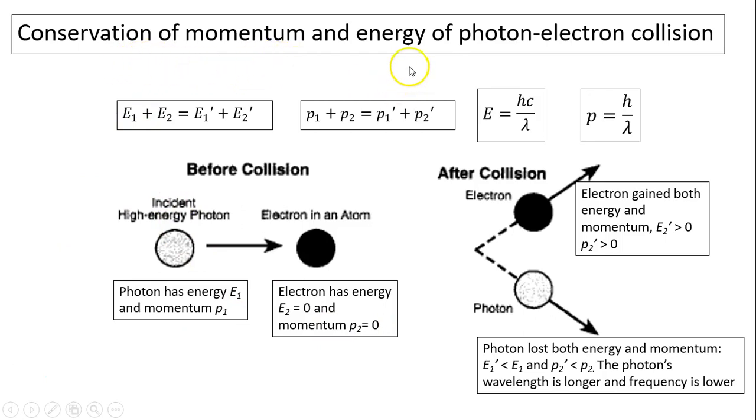So, momentum and energy are conserved in photon electron collision. This is before collision, all the energy equals after collision. This is before momentum equals after momentum. So, remember, energy of the photon is hc over lambda. Momentum of photon is h over lambda. Before collision, photon has energy e1 and momentum p1. Before collision, electron has zero energy and zero momentum. After collision, electron gains energy and gains momentum. Therefore, photon's energy has to be less and photon's momentum has to be less. Less energy and less momentum means the wavelength has to be longer and frequency is lower than before.